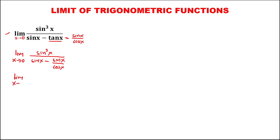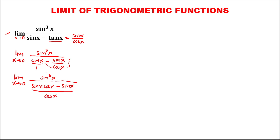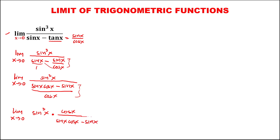To simplify, we have the limit as x approaches 0 of sine to the power 3x. For the denominator, we multiply over 1, giving us sine x cosine x minus sine x over cosine x. We can then take the reciprocal of this denominator.